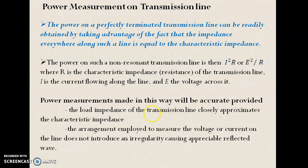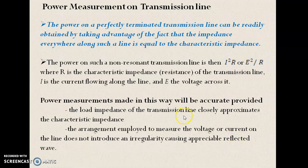The accuracy will be good if the load impedance of the transmission line is approximately equal to the characteristic impedance. And obviously the arrangement to measure the voltage or current across the transmission line should not introduce any irregularity, because it will imply a reflected wave.